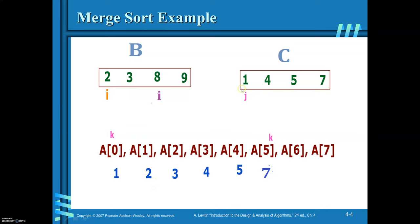Continuing: I now points to 8. Compare 8 and 4: 4 is smaller, so 4 is copied. Then compare 8 and 5: 5 is copied. J is incremented; 7 is smaller, so 7 is copied. K now points to the next position. All elements of C have been copied onto A. The remaining elements of B — 8 and 9 — are copied from I to P minus 1, filling positions K to P plus Q minus 1. This is how the merge algorithm works.